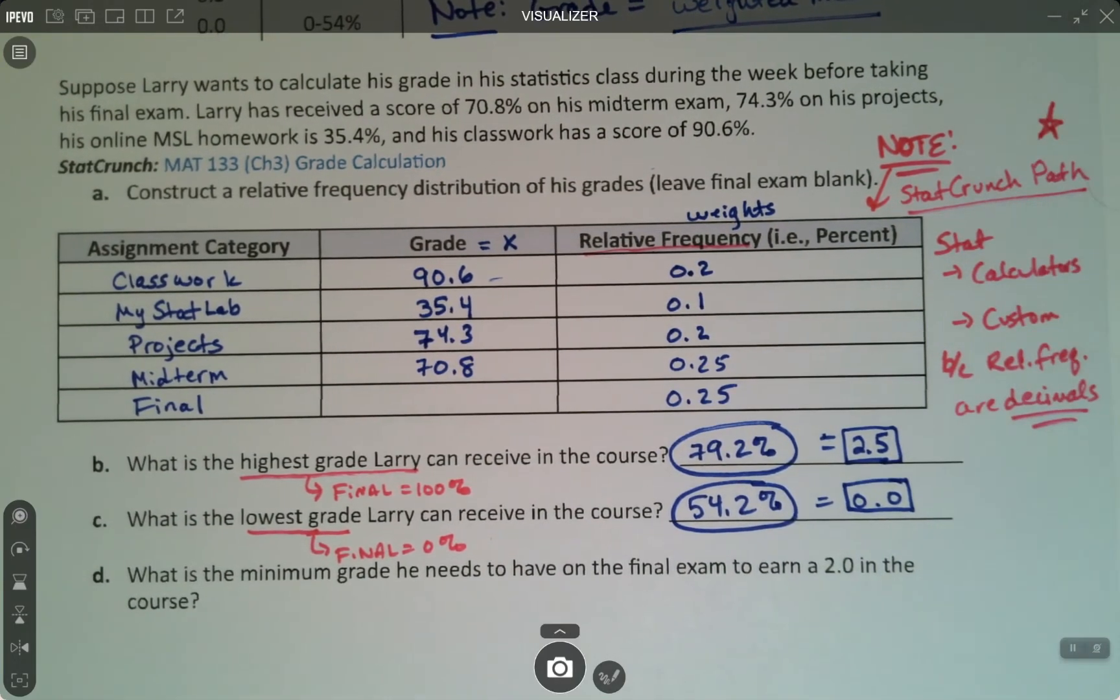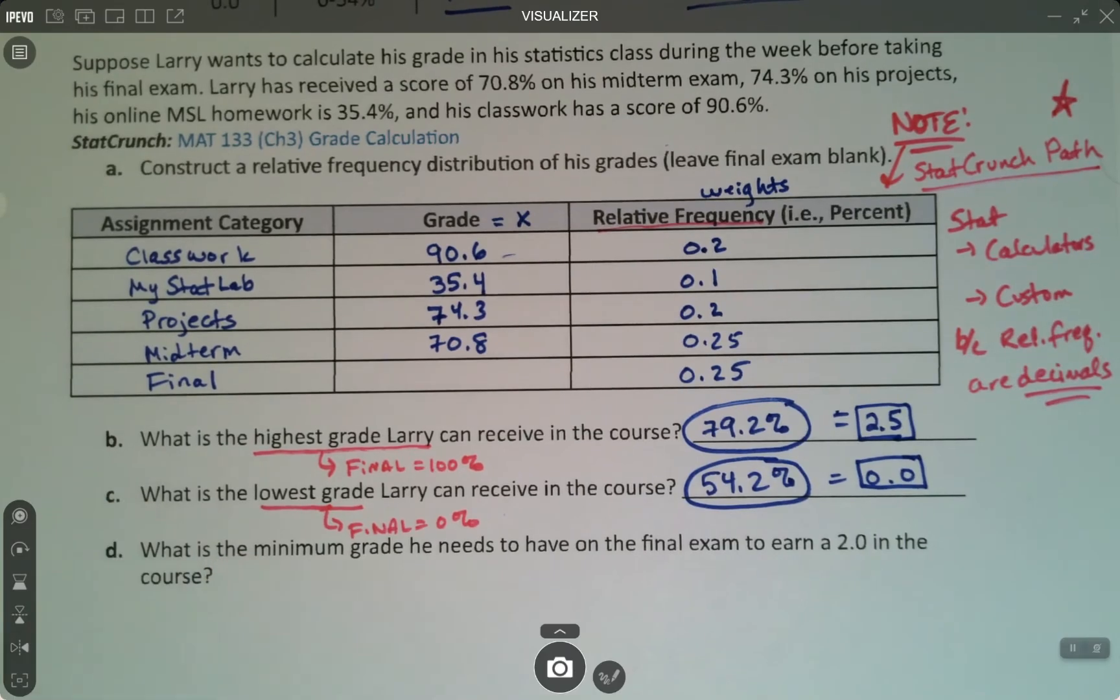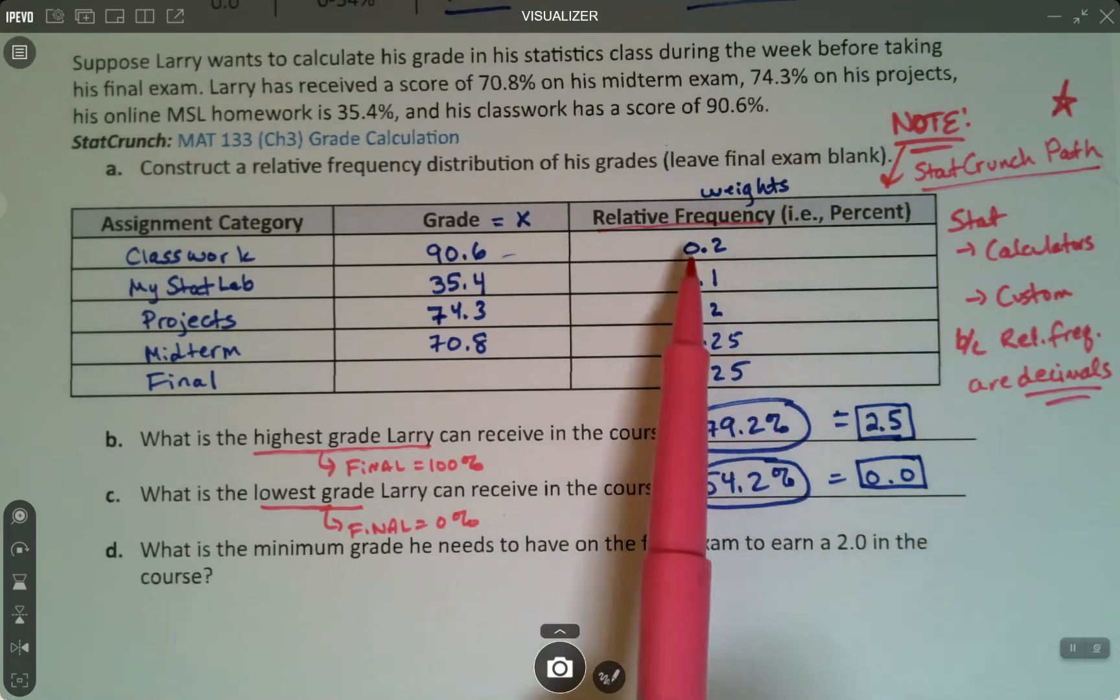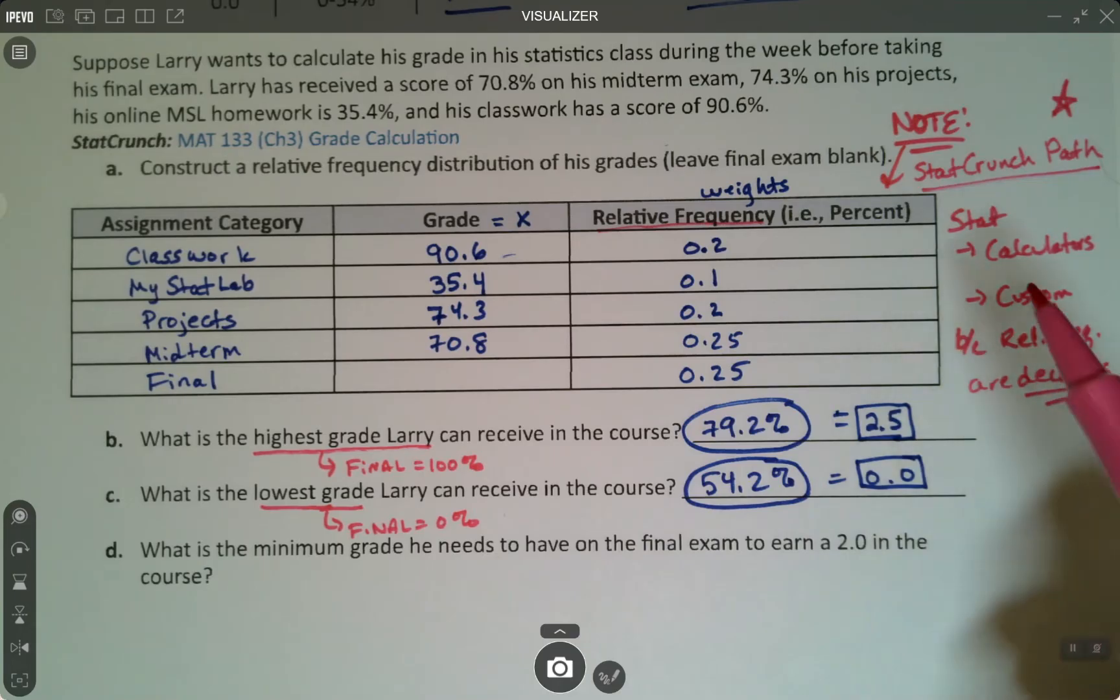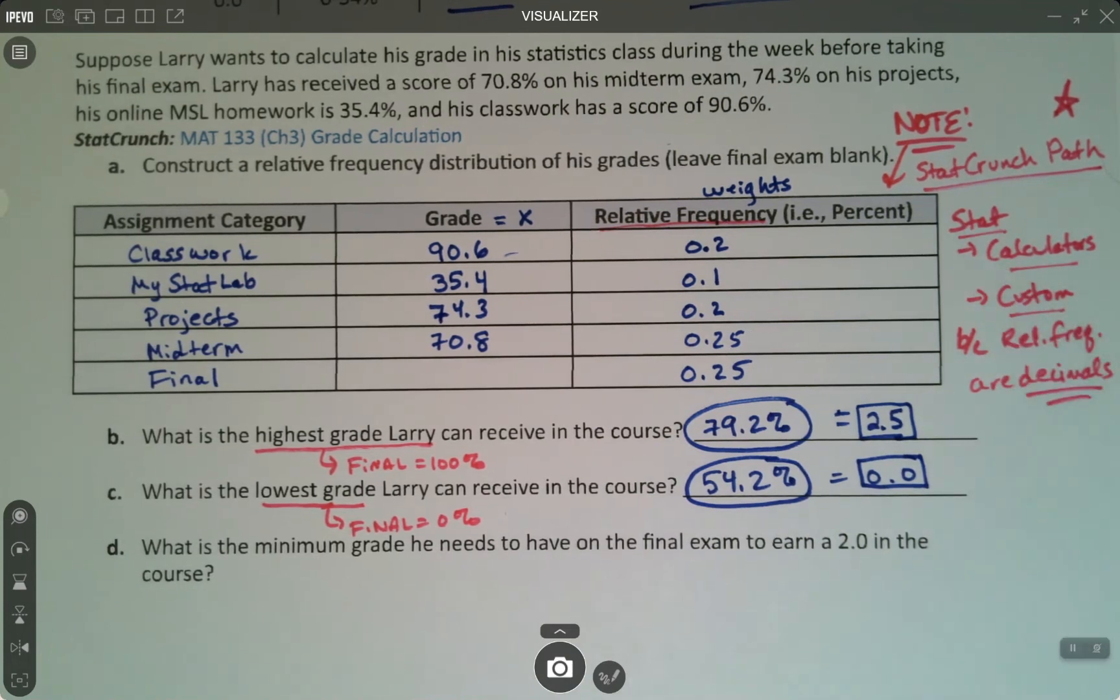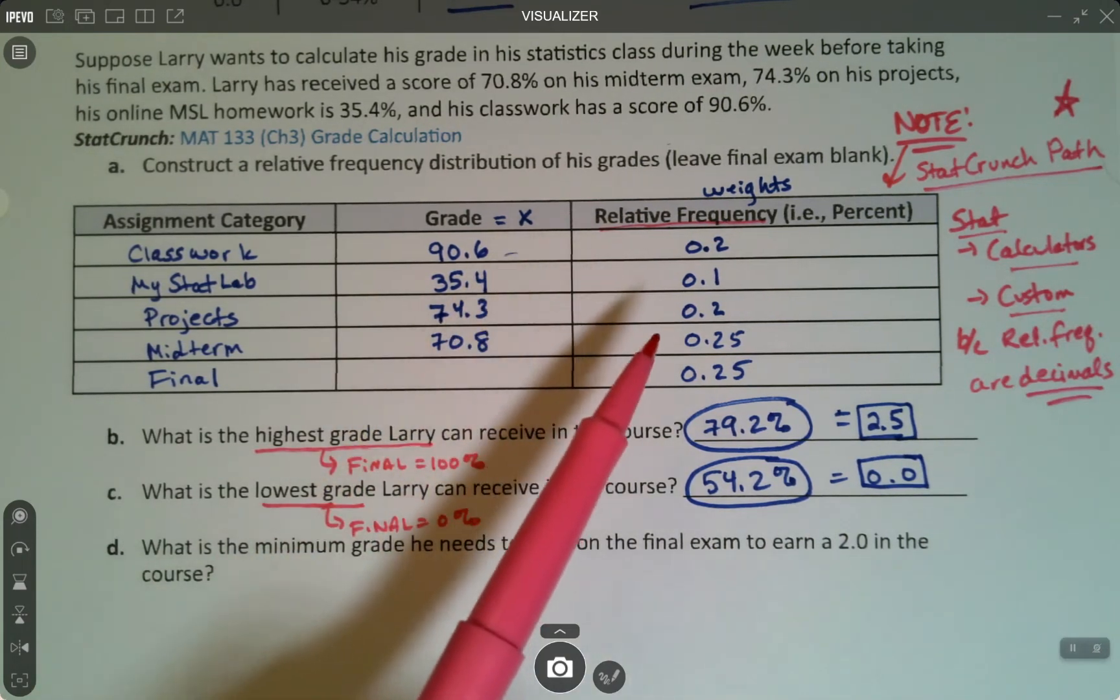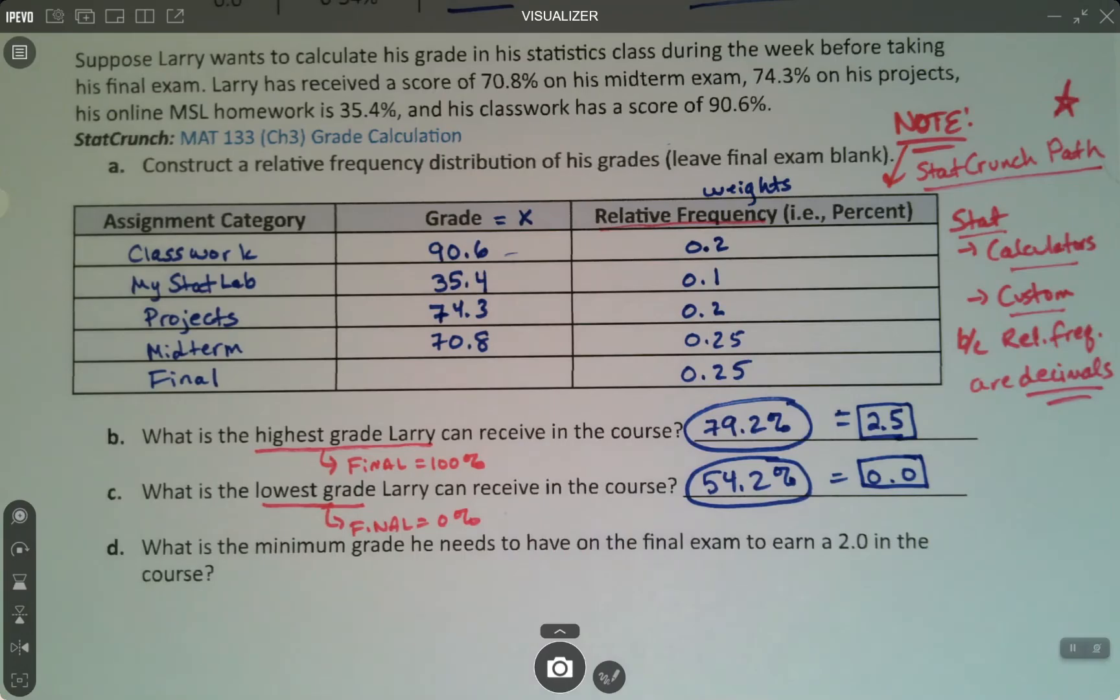There are three ways to find the mean with stat crunch. There's the regular stat columns way that we've been doing through Chapter 3. Then there's the grouped binned way, which we can use when the frequencies are whole numbers. And then there's this stat calculators custom way that we use when the frequencies are relative frequencies, when they're decimals. It would be an important thing to put on a note sheet for an exam.